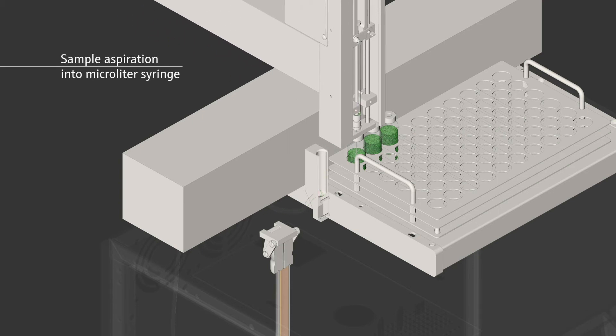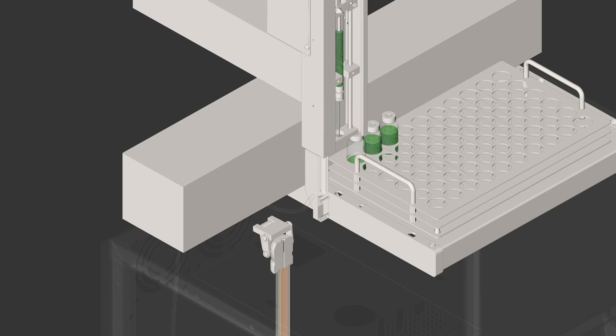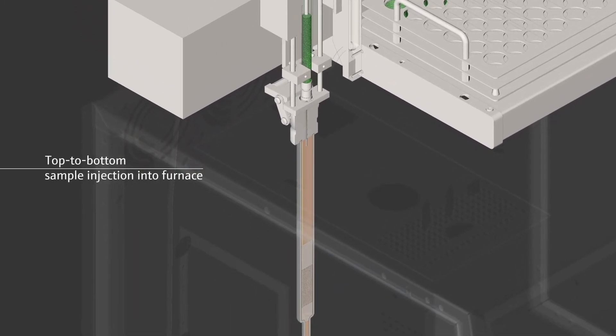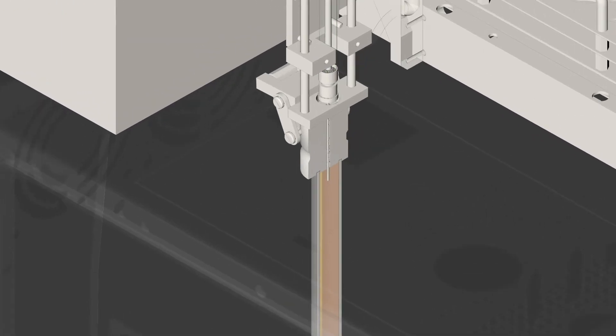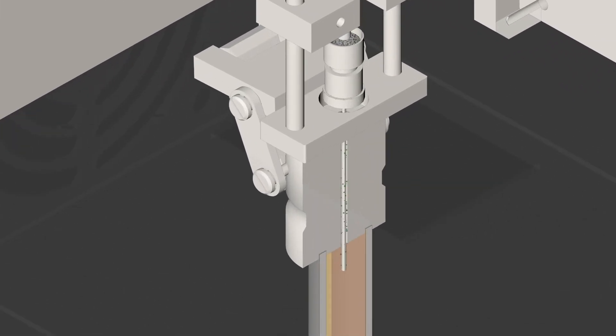The septum free direct injection is done top to bottom by a wide bore needle with complete particle transfer. No tubes and valves are needed. The injection needle is thermally cleaned in the furnace head during measurement.